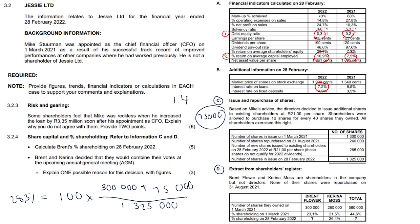Brent and Karina decided they would combine their votes at the upcoming annual general meeting — the AGM where all shareholders meet and make decisions. Explain one possible reason for this decision: why would they want to combine their votes? This is a very interesting question.